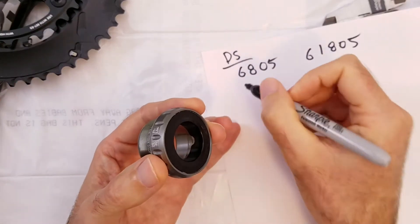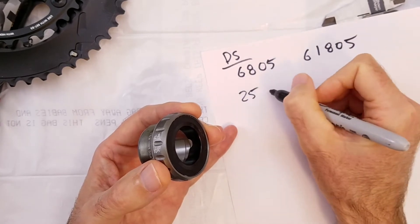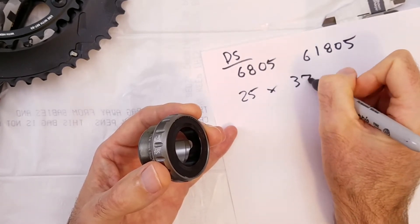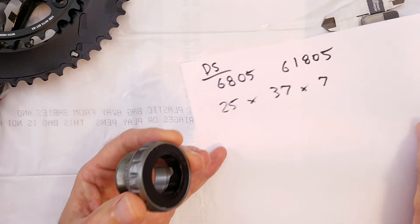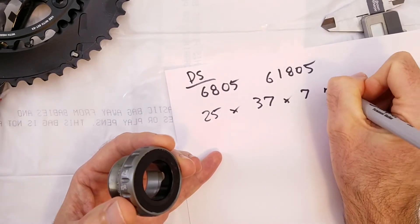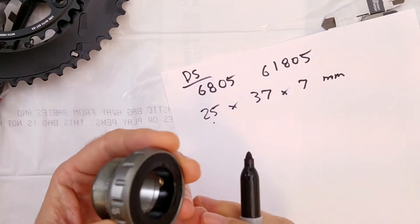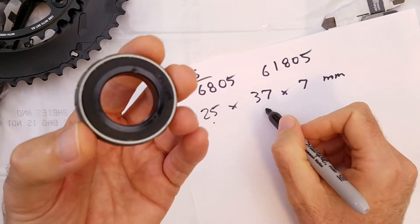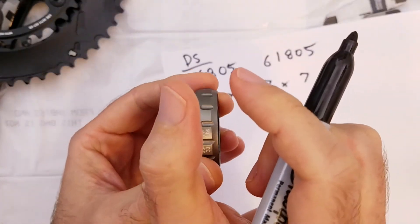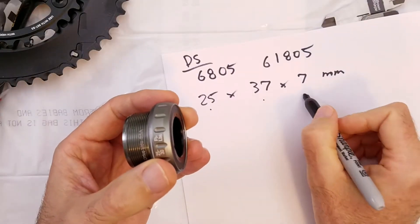The dimensions of it are 25 by 37 by 7 millimeters. So the inside diameter is 25 millimeters, the outside diameter 37 and the width is 7 millimeters.